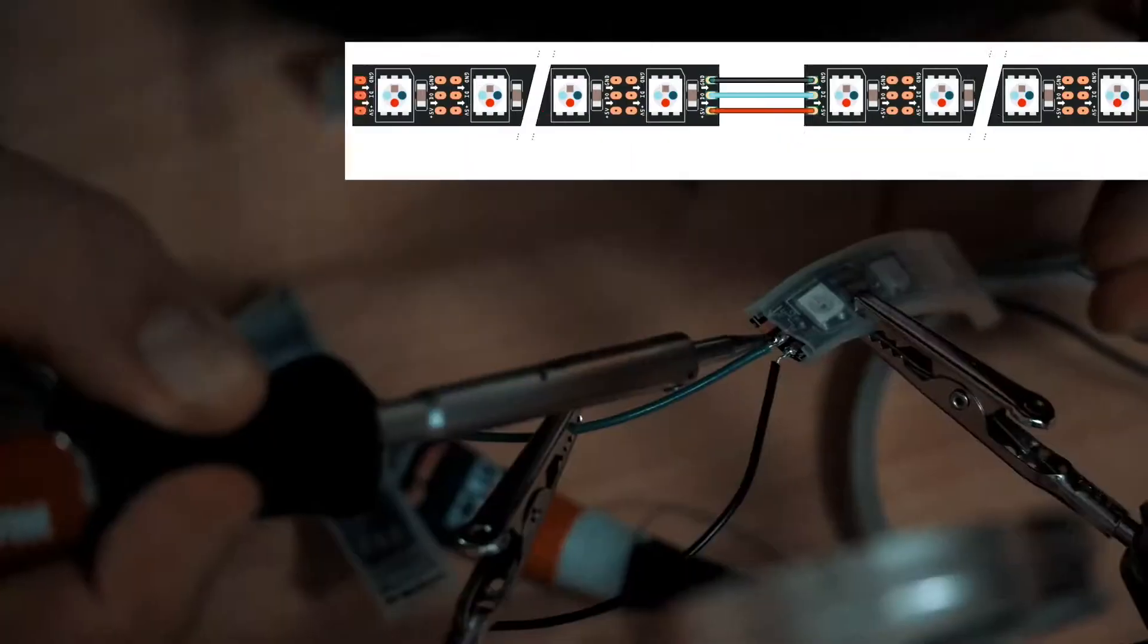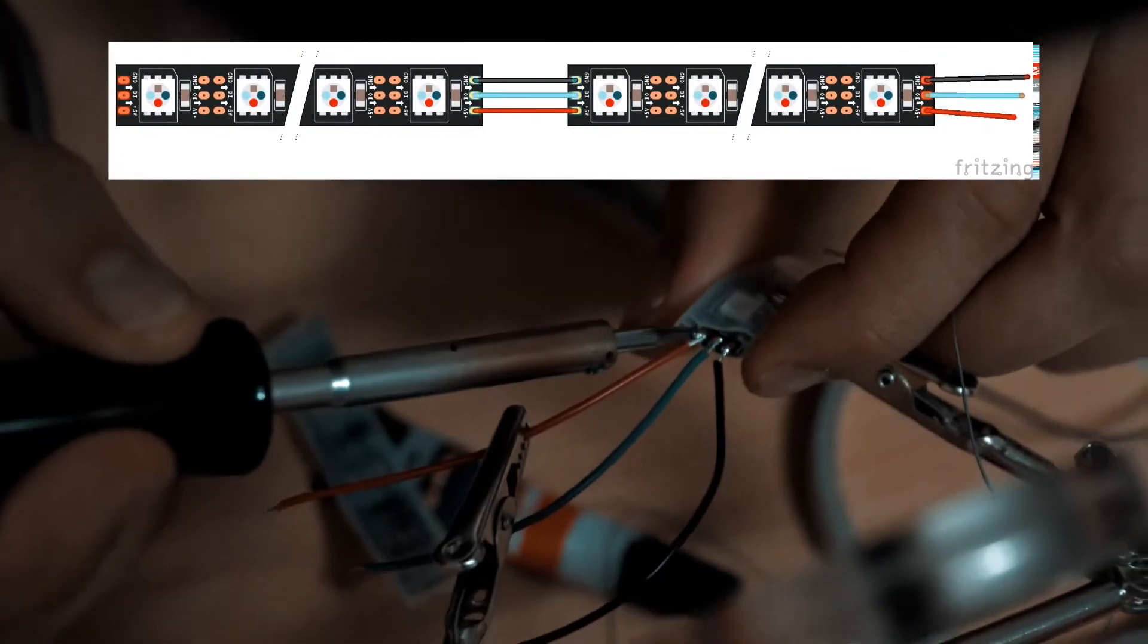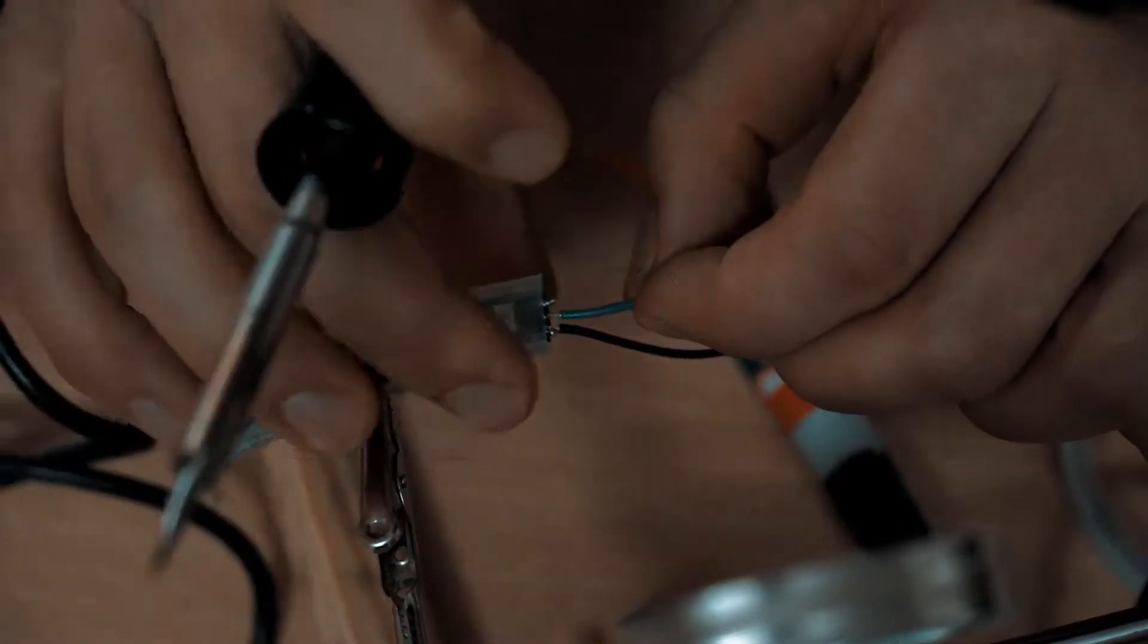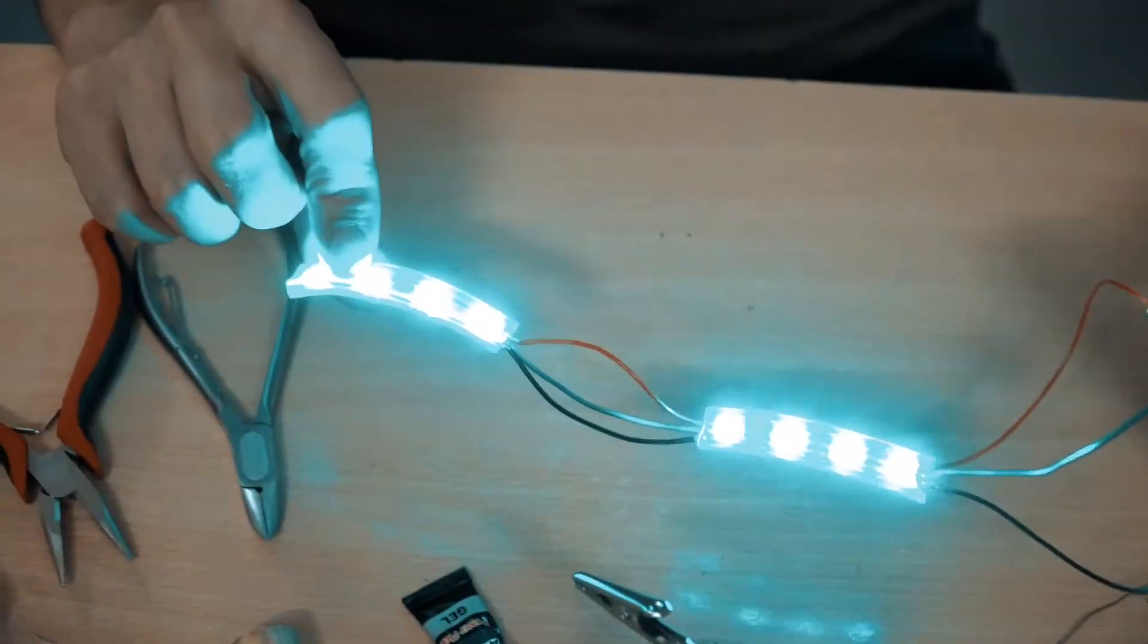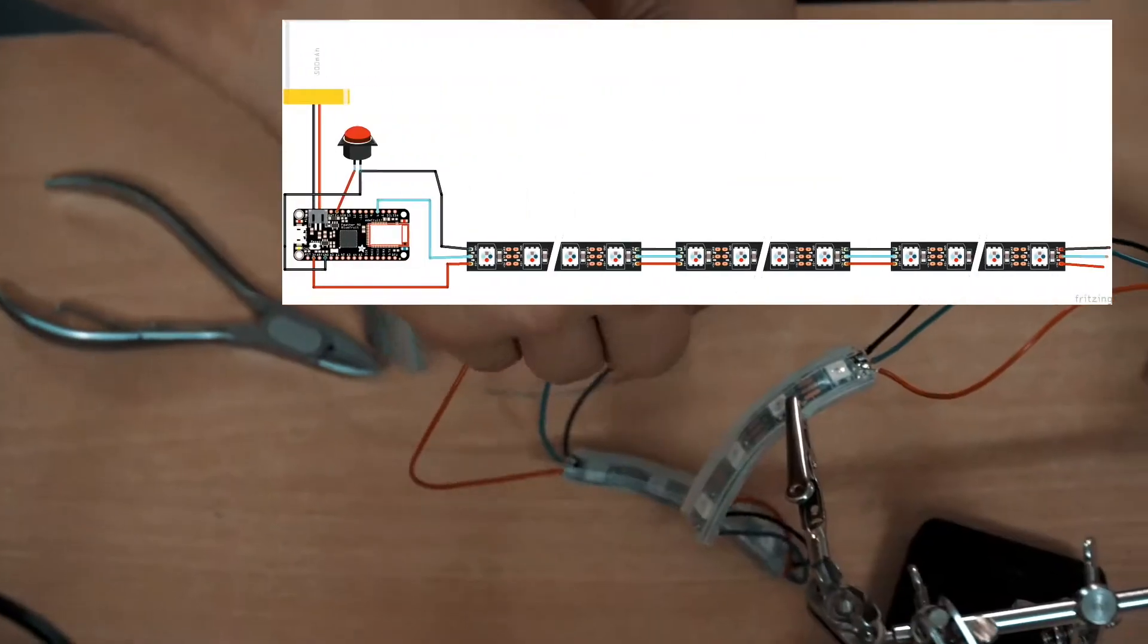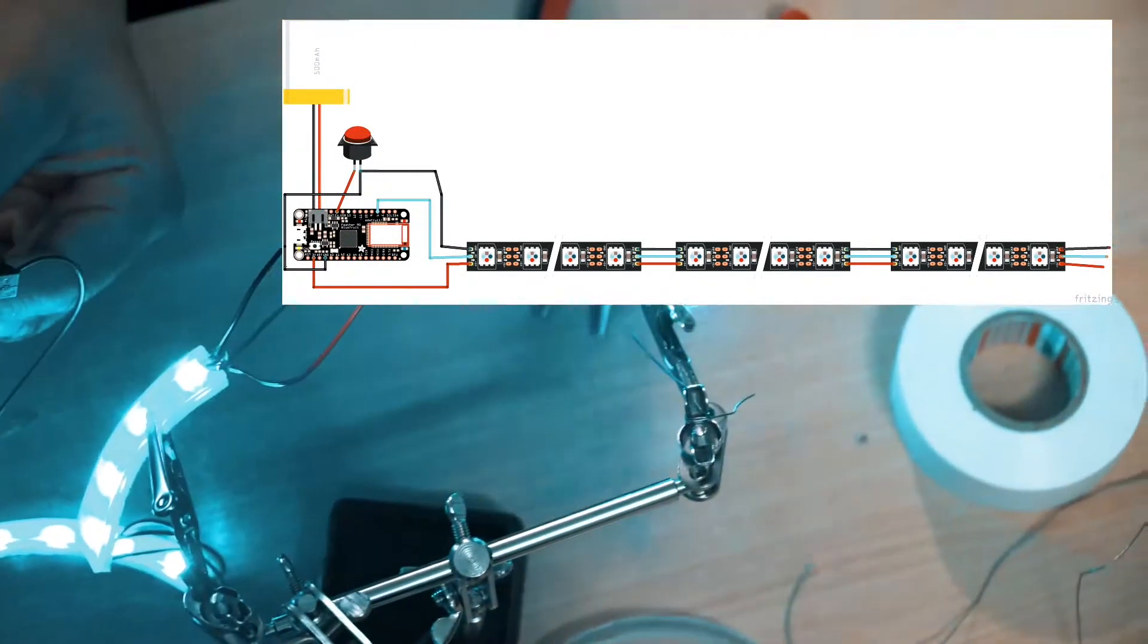It's working, so let's put the next round of LEDs. Always make a test after each step of soldering. As you see, I've just put 3 rounds of LEDs.